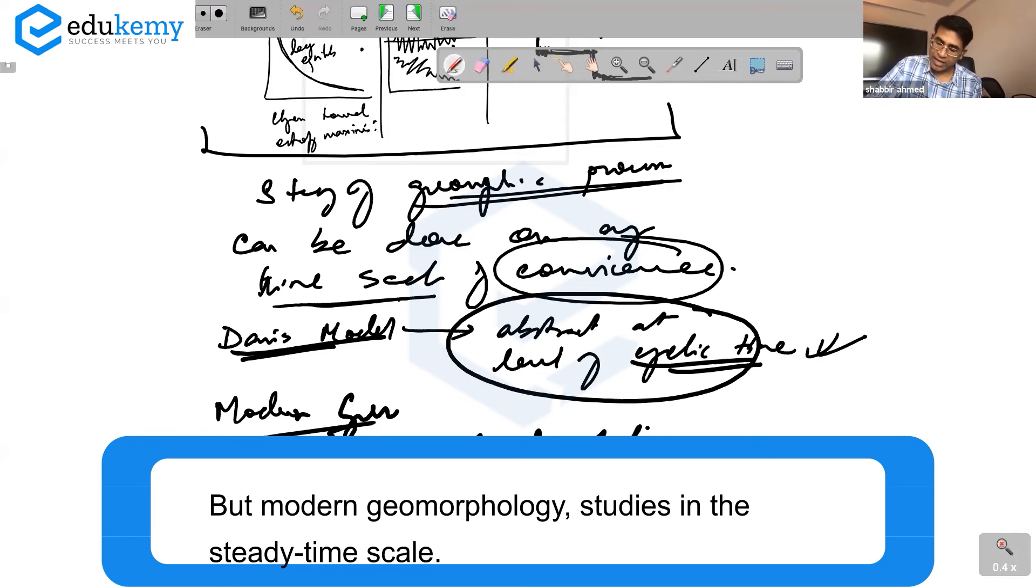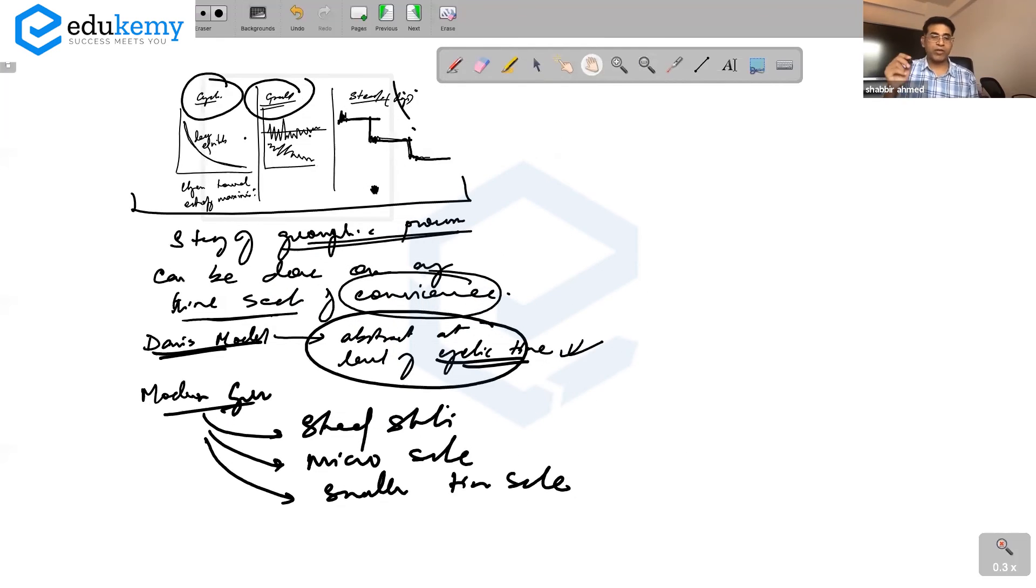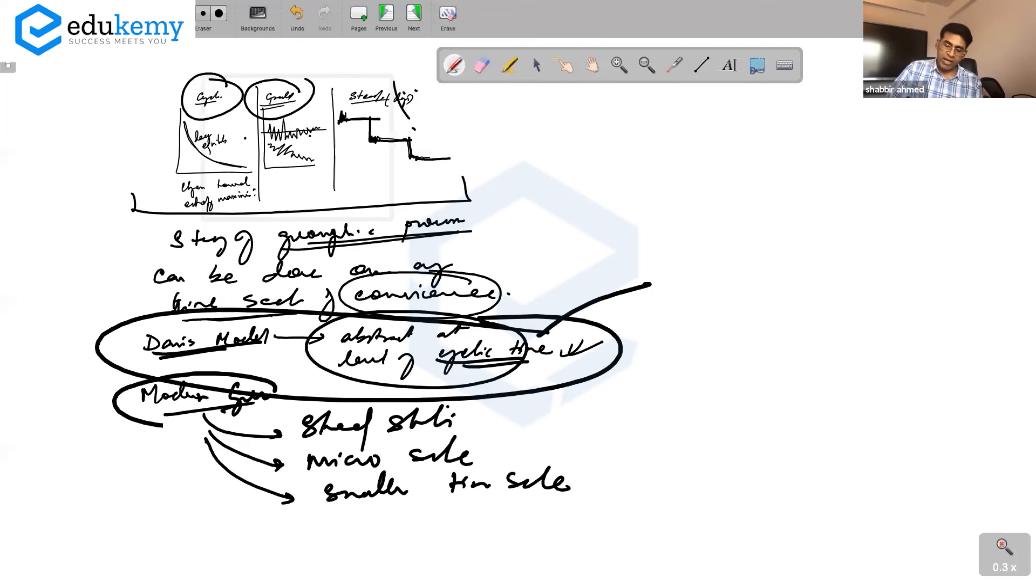Modern geomorphology studies at micro scales, at smaller time scales. So scales are important. Whatever the process study, the scales are important. But which is the best one? Davis said we can study in terms of millions of years, whereas modern geomorphology says we can study at the steady state or maybe even at the graded state at micro time scale.